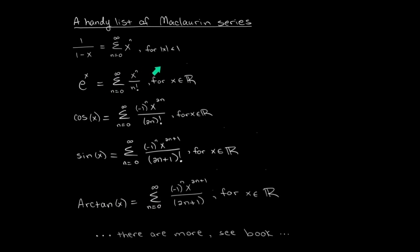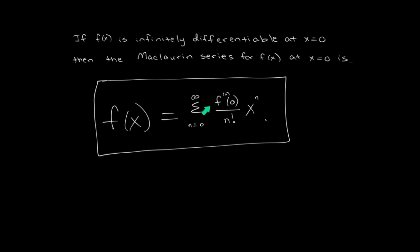For e to the x, all of the derivatives are also e to the x, and plugging in x equals 0 gives e to the 0, which equals 1. So for the e to the x function, the numerator is always equal to just 1, and you can immediately see that the Maclaurin series formulas are directly derived from this.